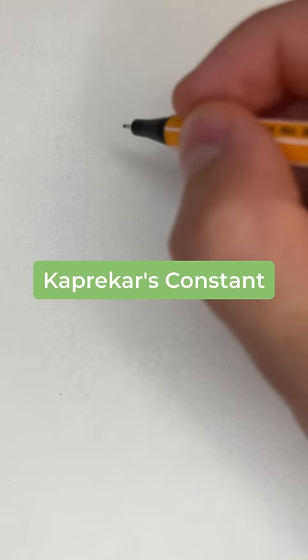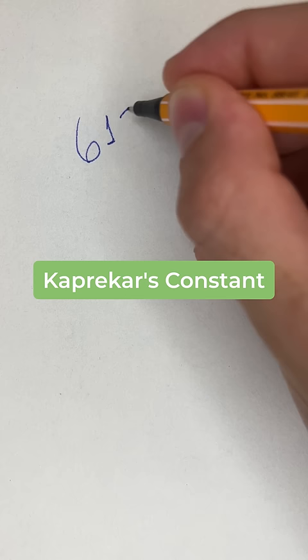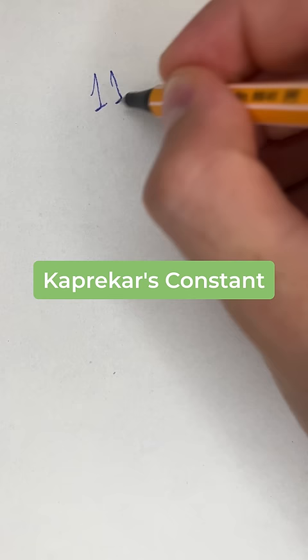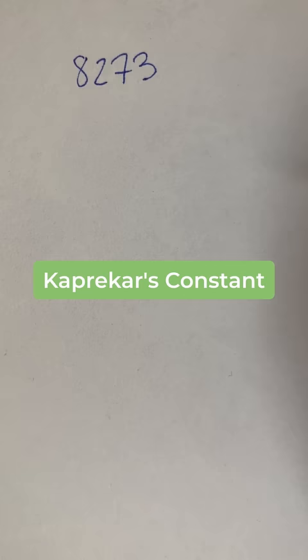There's a mysterious number in mathematics known as Kaprekar's Constant. It was discovered by Indian mathematician D.R. Kaprekar in the 1940s. Let's start by choosing a random four-digit number. The only requirement is that at least two of the digits be different. So I cannot choose 1111, but I can choose 1110. I'll start with 8273.